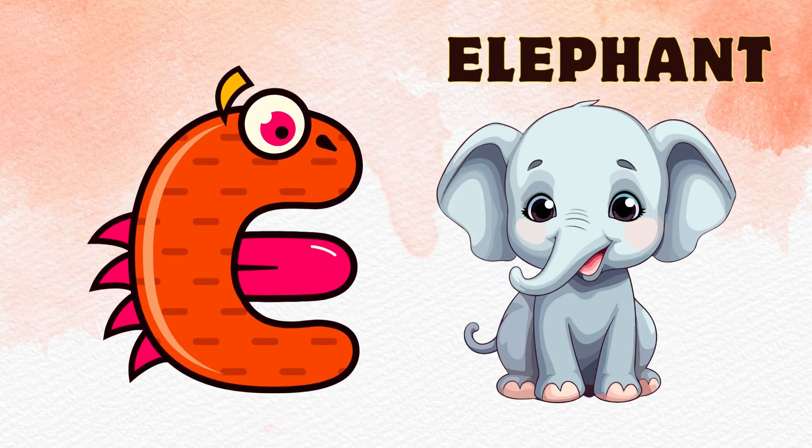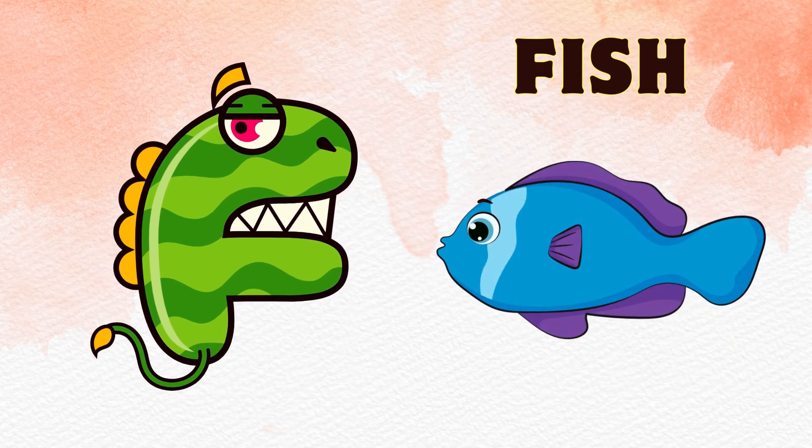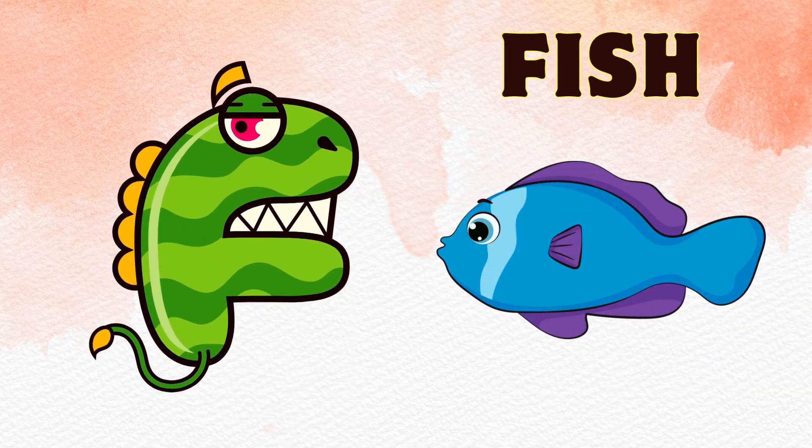E is for Elephant, E-E-Elephant. F is for Fish, F-F-Fish.